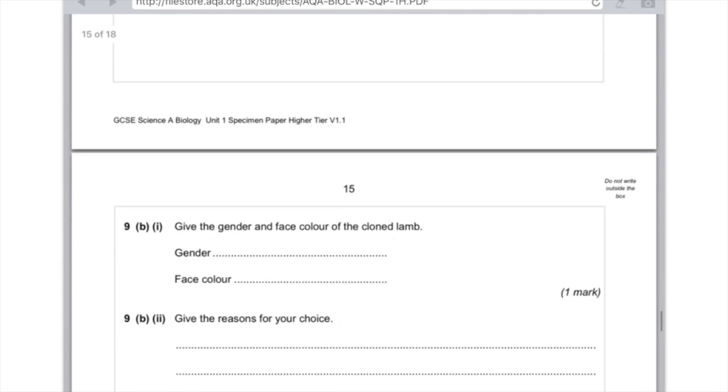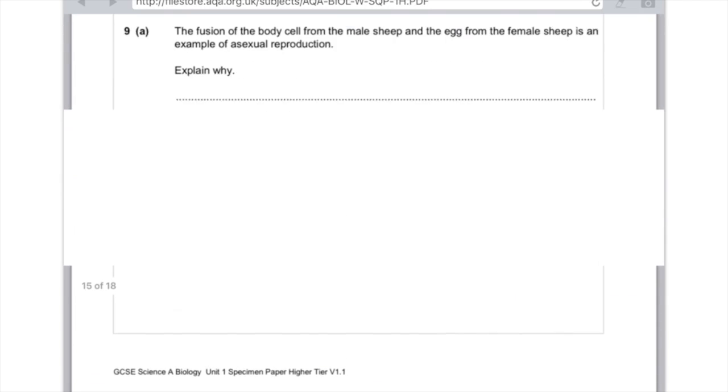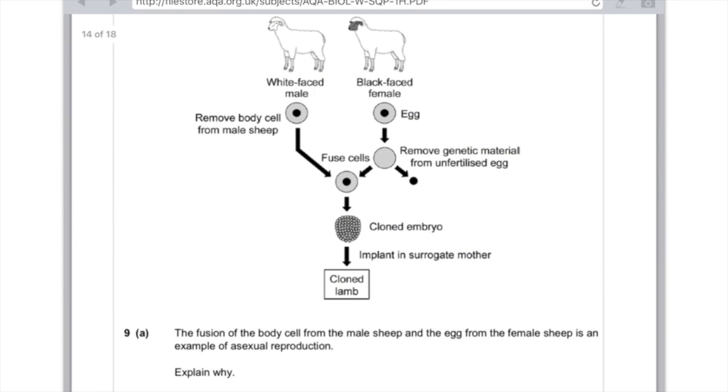9b: Give the gender and face color of the cloned lamb. Even if you've got no idea what's going on, you've got a 50% chance of getting it right because there's only two sheep mentioned. But remember what I just said when I was reading out the description, which is that it's the white-faced male that we remove the body cell from.